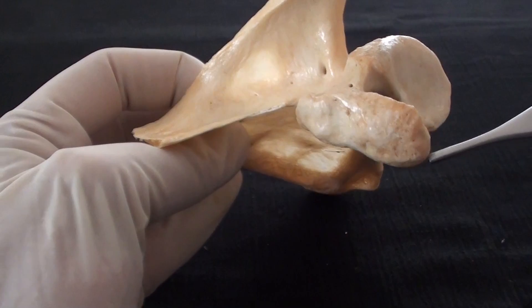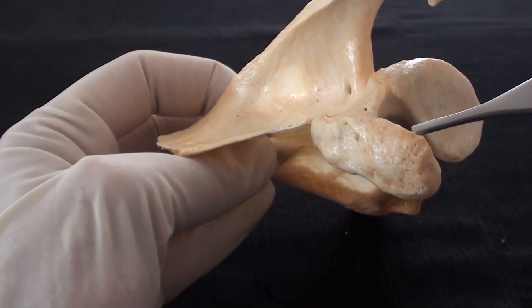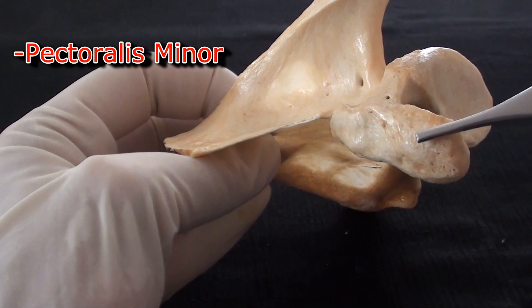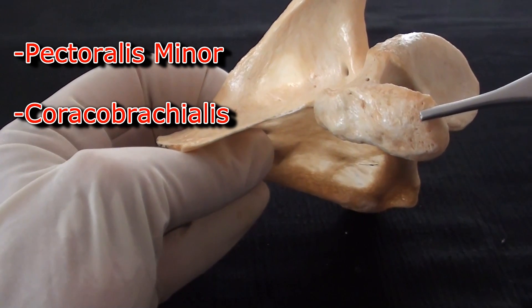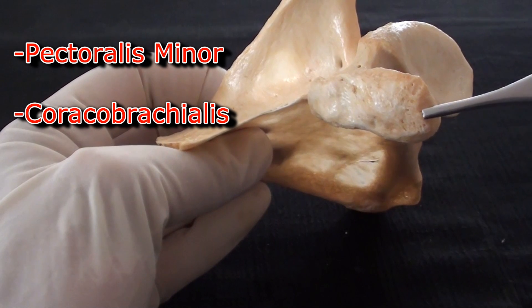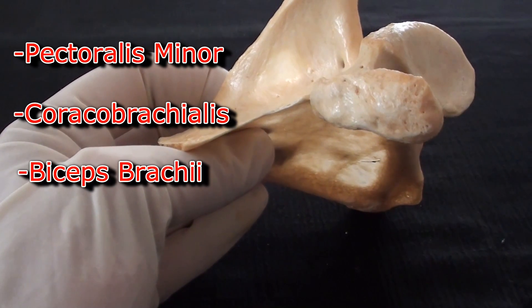The coracoid process is interesting attachment point for three different muscles the pectoralis minor, the coraco brachialis and it is also attachment of the short head of the biceps brachii muscle.